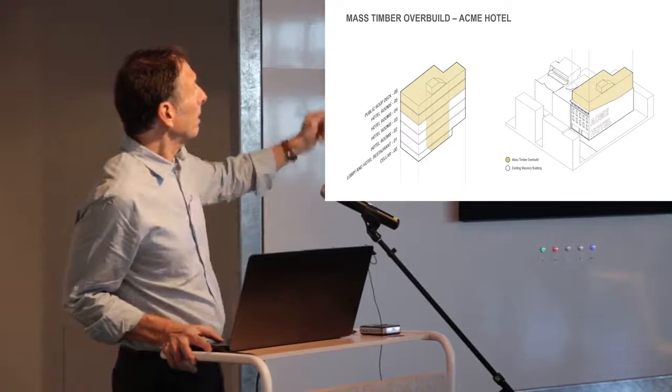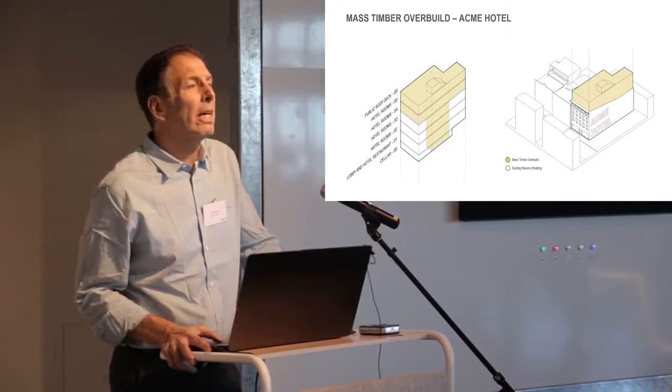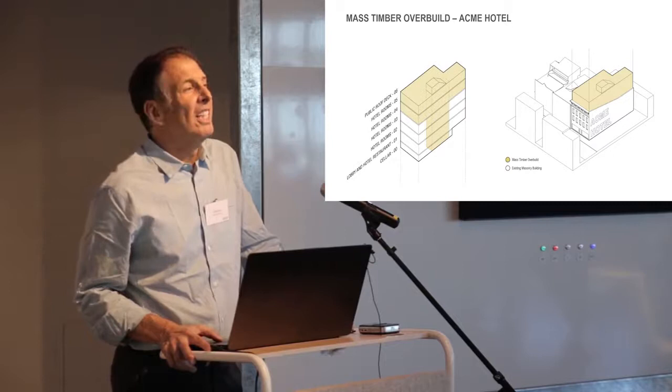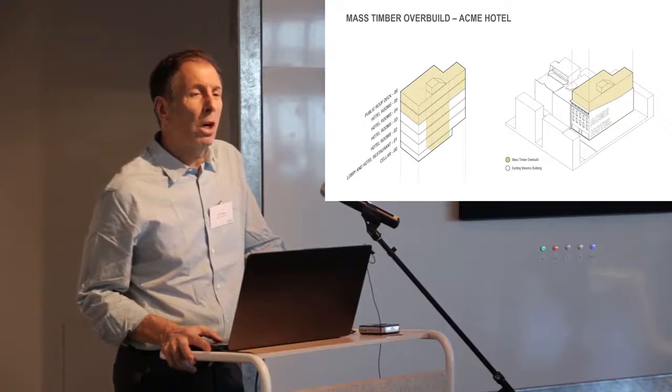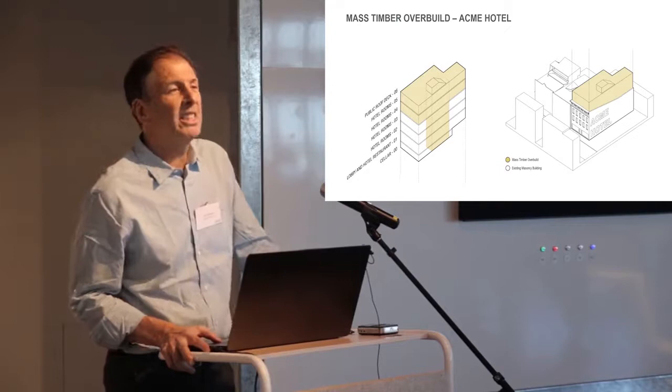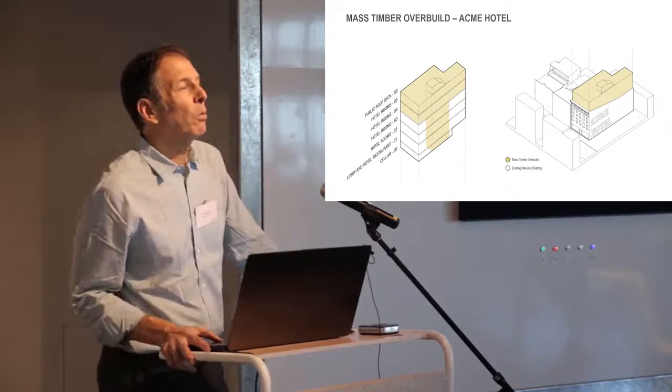But although this shows CLT exterior, the codes in the U.S. do not allow CLT to be an exterior wall if you're above a few floors because it is not a non-combustible material. This is a flawed code requirement that we need to overcome because, obviously, passive house construction is enhanced with mass timber. It's the easiest way to accomplish that. And without being able to use timber walls, you can't accomplish that.